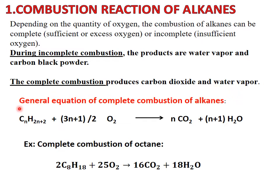Let's write the balanced chemical equation for the complete combustion of an alkane. You have to follow the following general equation: CnH2n+2, which is the general molecular formula of an alkane, plus (3n+1)/2 O2, produces n CO2 plus (n+1) H2O. Don't forget that n represents the number of carbon atoms. For example, the complete combustion of octane is: 2C8H18 + 25O2 produces 16CO2 + 18H2O.